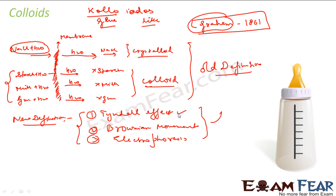Finding whether a substance shows the Tyndall effect is a very easy process. Finding whether it shows Brownian movement is very easy. Finding whether it shows electrophoresis is also a very easy process. Thus the new definition of colloids came: anything which shows these properties is a colloid.